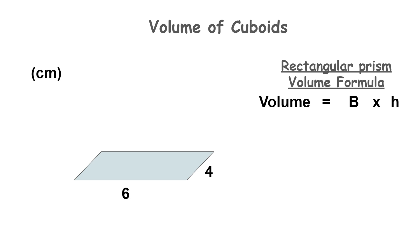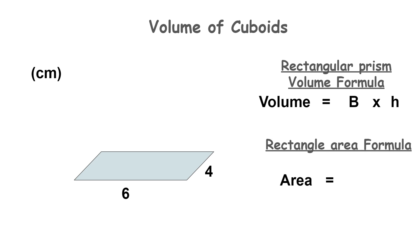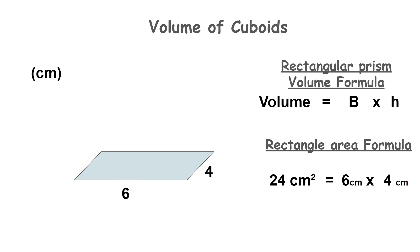To calculate the area of a rectangle we use the formula B multiplied by H, which stands for base multiplied by height. That is the length at the bottom of the rectangle, six centimeters, multiplied by the width, four centimeters. Six centimeters multiplied by four centimeters equals 24 centimeters squared.